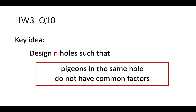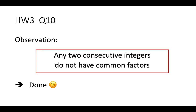What holes can we think about? We want to distribute 1 to 2n into n holes such that numbers in the same hole have no common factor. One useful observation: any two consecutive integers do not have common factors. For example, 17 and 18 — if they had a common factor, that factor must divide their difference, which is 1. But no number greater than 1 can divide 1, so consecutive numbers have no common factor.